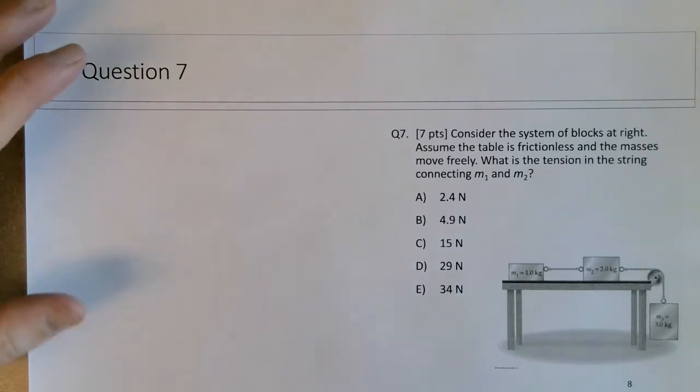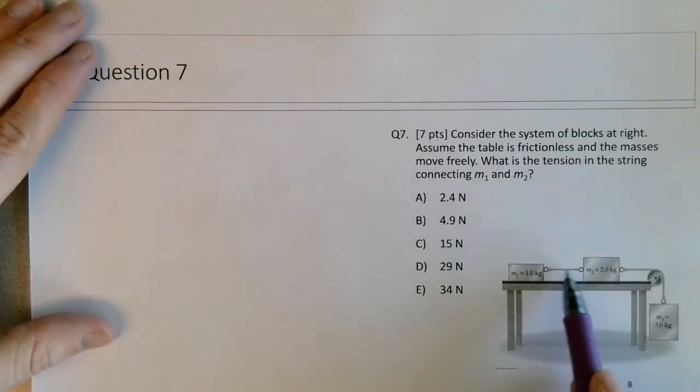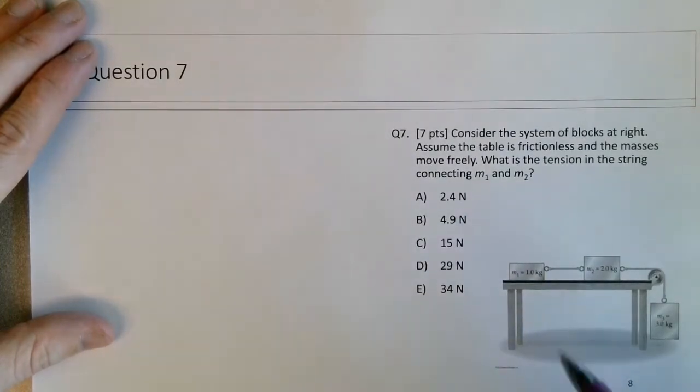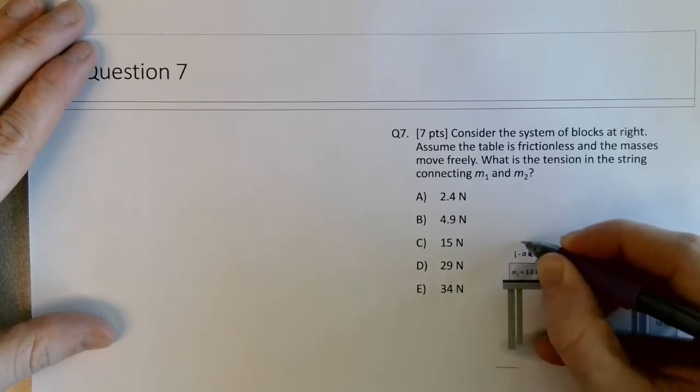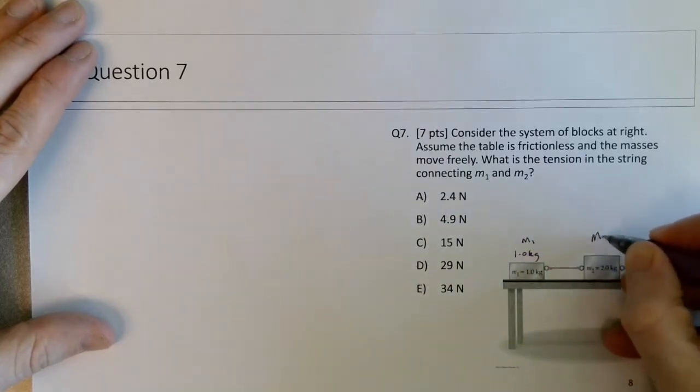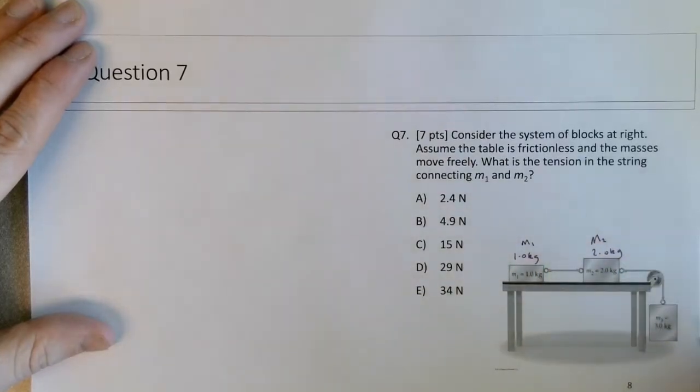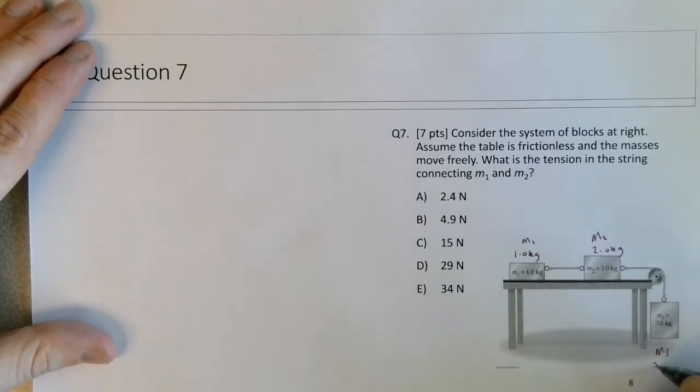So we're trying to figure out the tension in the string connecting M1 and M2. If it's difficult to see in the video, this is a 1 kg mass, this is M1, M2 is a 2 kg mass, and then M3 is a 3 kg mass.